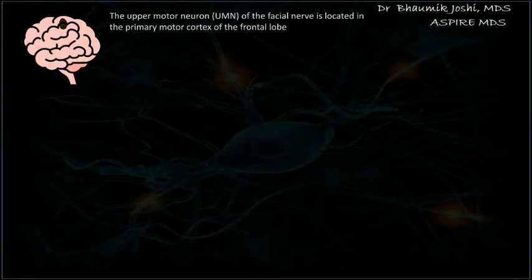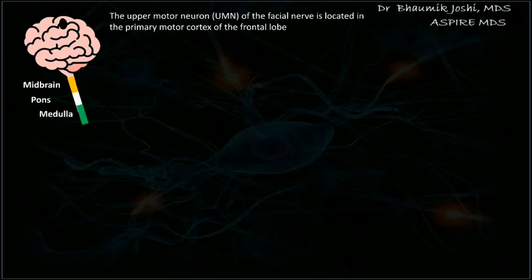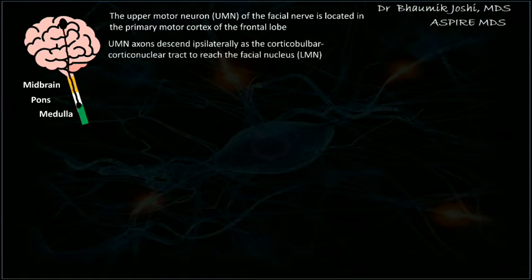The upper motor neuron of the facial nerve is located in the frontal lobe. From this frontal lobe, it sends axons to its lower motor neuron, which is located in the brainstem at the junction of the pons and medulla. So it is sending its axons to the lower motor nucleus.